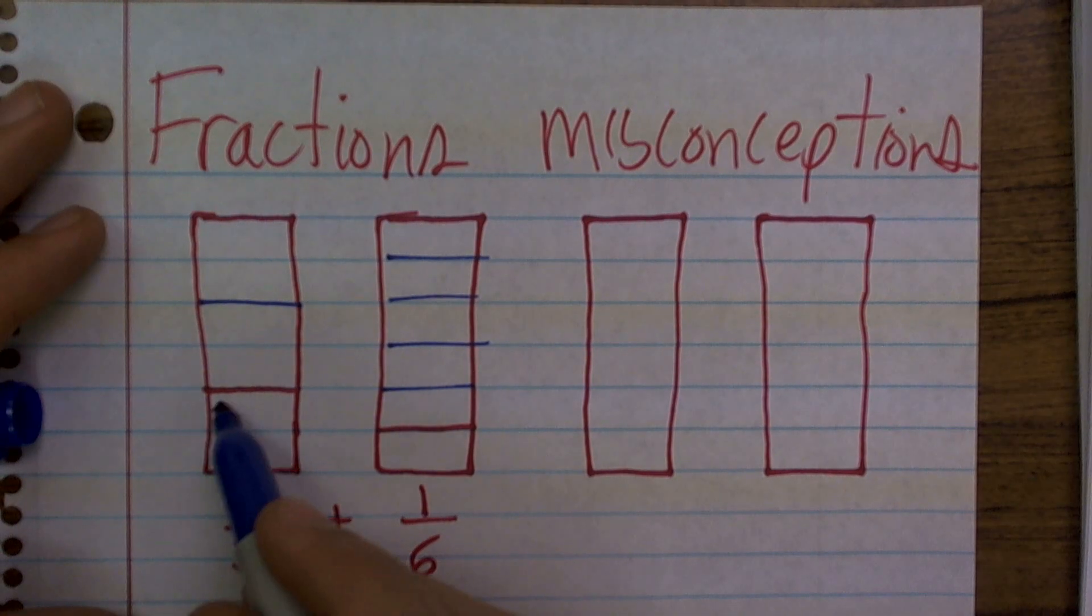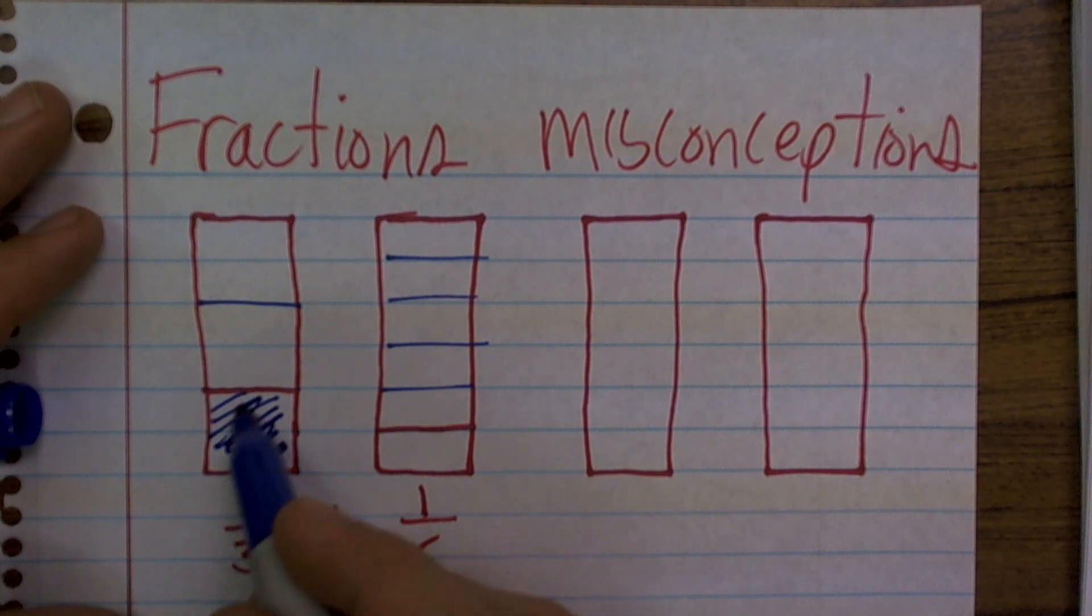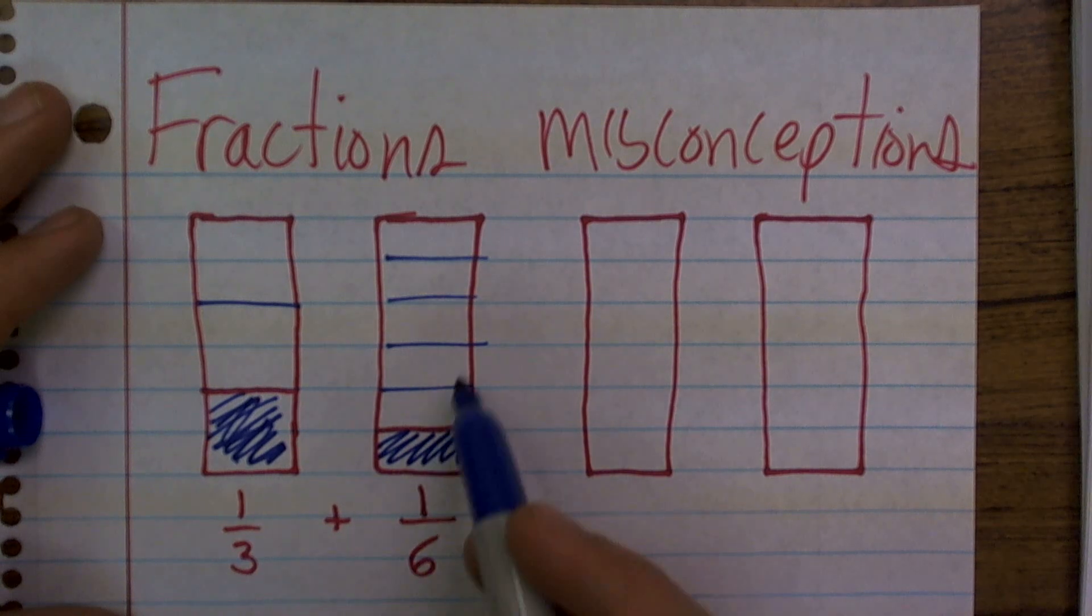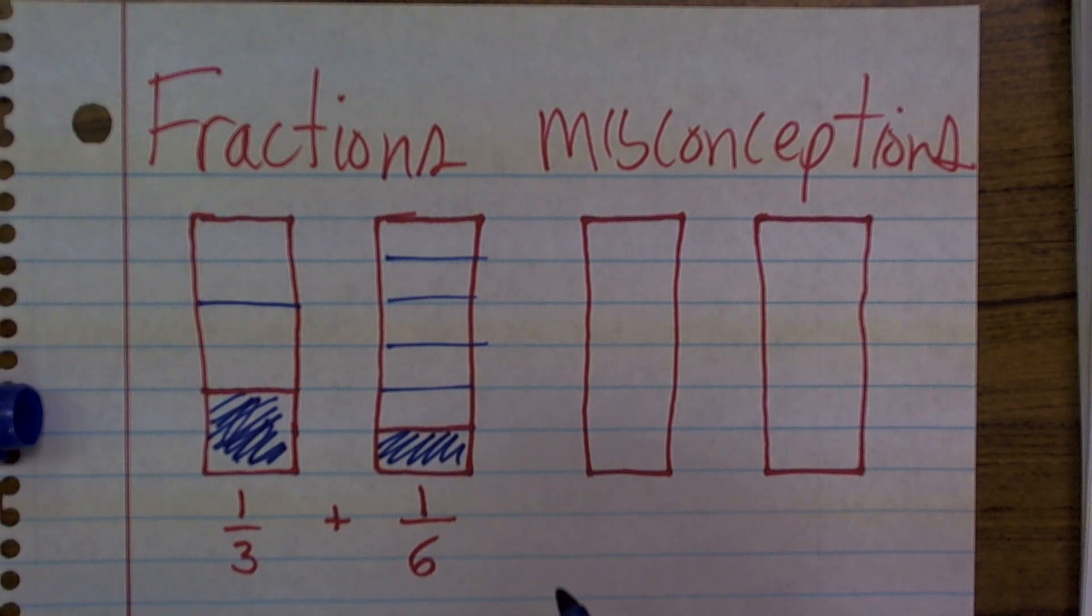So my 1 third will be this bar, and then my 1 sixth is going to be one part out of these six.